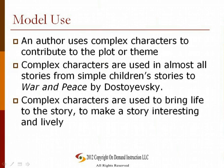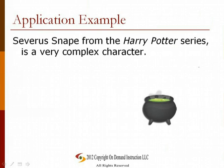An author uses complex characters to contribute to the plot or theme. Complex characters are used in almost all stories, from simple children's stories to War and Peace. They are used to bring life to the story and make it interesting and lively. Severus Snape from the Harry Potter series is a very complex character — we are never sure if he is good or bad, or which side he is on. At one point it seems certain he is on the side of evil, but in a surprise turn he is revealed to be good. Over the series he makes many twists and turns, and the reader is never certain until the very end. His conflict was, in part, with Voldemort stealing the woman he loved, even though she was married to someone else, and he was willing to put his life on the line to avenge her death.